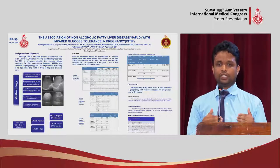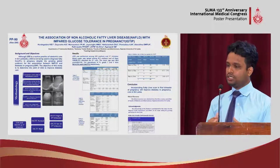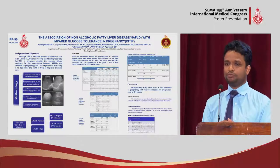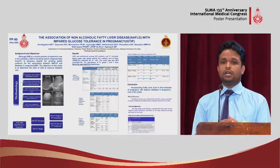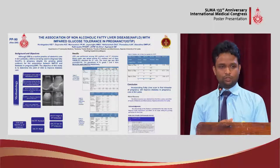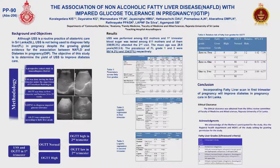We classified OGTT and blood sugar values based on the International Association for Diabetes in Pregnancy Study Groups criteria. In our study, there were 632 mothers who underwent ultrasound scan at the first trimester. Our fatty liver prevalence was 51.2%, with grade two prevalence of 14.2%.